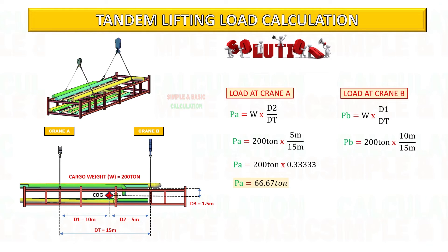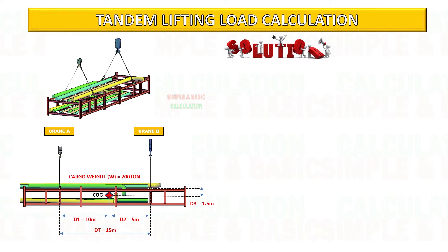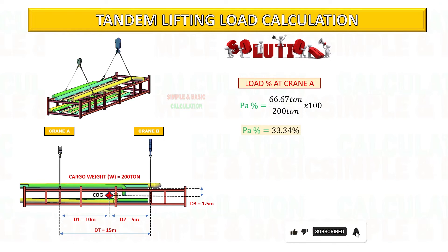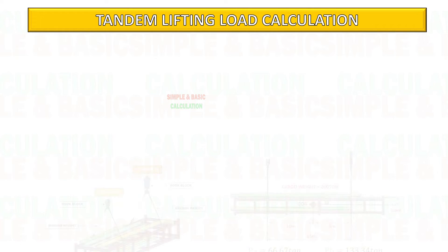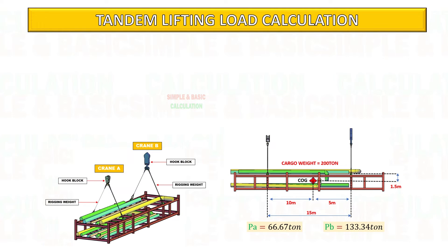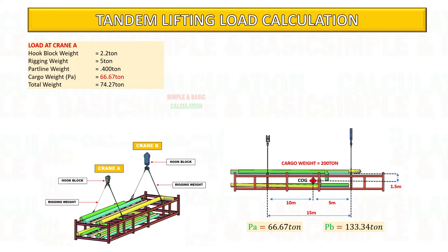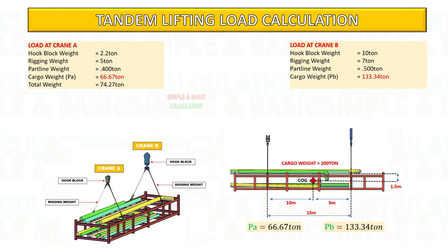The same calculation is to be followed to get the load at crane B. This is a sample to get the load percentage in each crane. After getting the distributed load in each crane, start to calculate the overall weight to be lifted by crane A and crane B by adding the total weight of hook block, rigging, part line weight, and cargo weight.